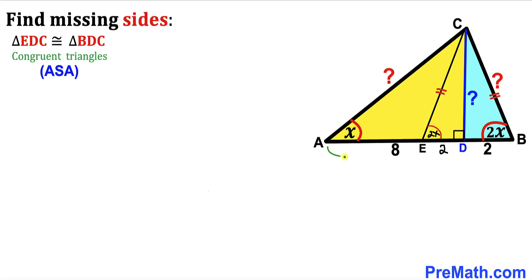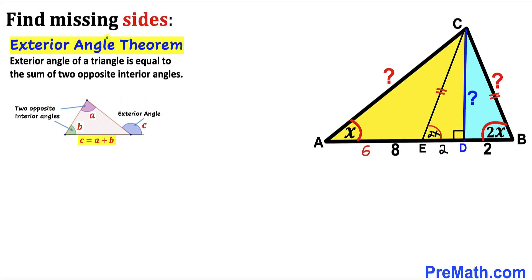The whole segment AD is 8 and segment ED is 2, so segment AE is 8 minus 2, which equals 6 units. Now let's recall the exterior angle theorem.